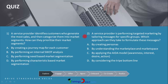Question number two: a service provider is performing targeted marketing by tailoring messages for specific groups. Which approach can they take to formulate these messages? Options are: by creating personas, by understanding the marketplace and market space, by applying the AIDA model — awareness, interest, desire, action — or by considering the triple bottom line.